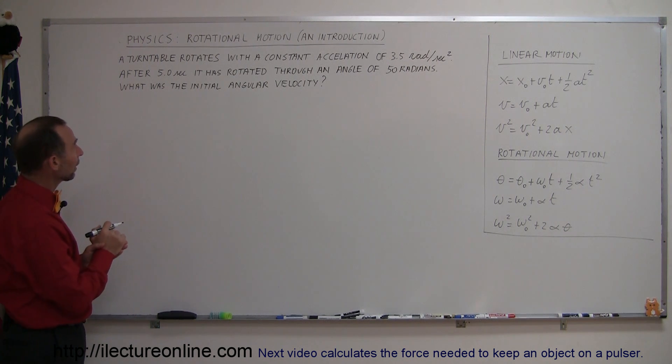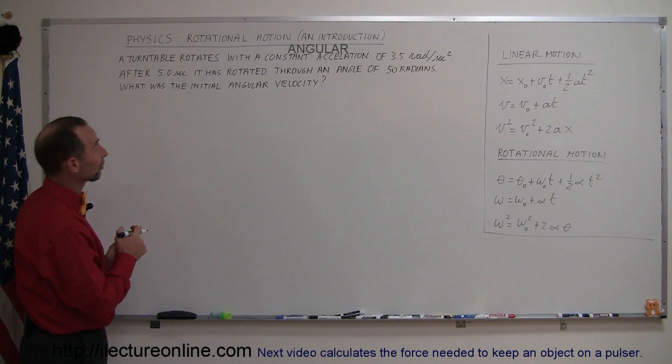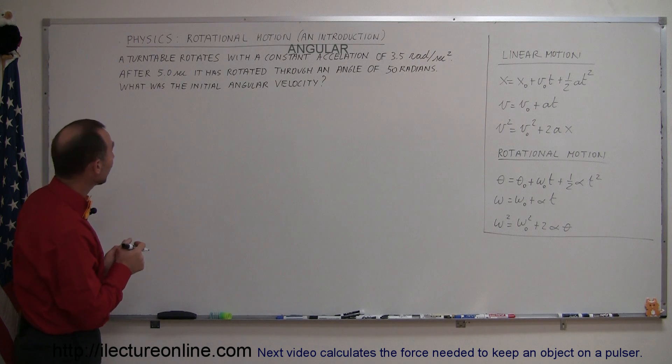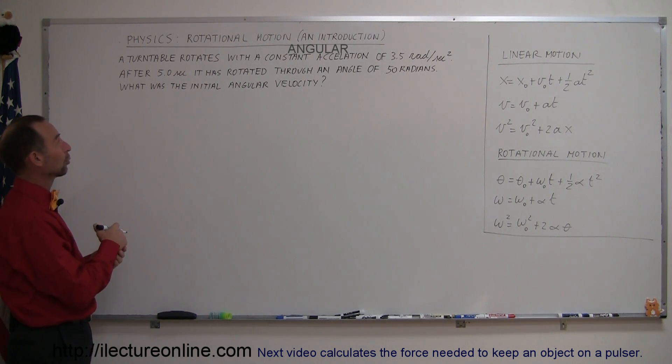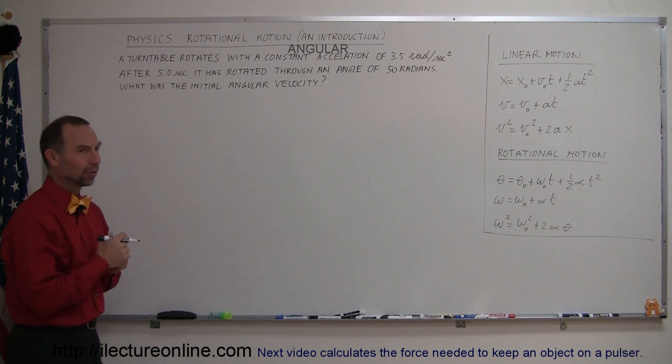It says a turntable rotates with a constant angular acceleration - I should say angular acceleration, I didn't write angular - but it should say angular acceleration of 3.5 radians per second squared. After five seconds it has rotated to an angle of 50 radians. What was the initial angular velocity?